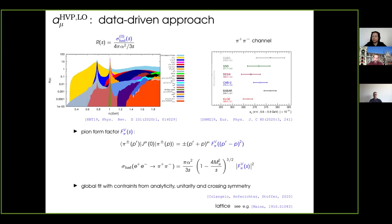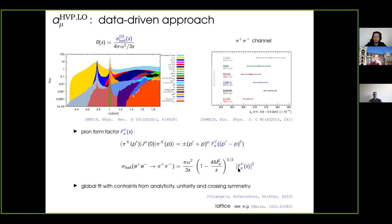This difference dominates the error on the hadronic vacuum polarization contribution to a_mu from the dispersive approach. The expectation is that new data from new experiments will allow to solve this problem, which is currently not fully understood. In order to introduce more theoretical constraint in this pi pi channel, one can also use the fact that it is related to the time-like pion form factor. The pion form factor can be constrained from analyticity, unitarity, and crossing symmetry, so one can do a global fit of experimental data imposing these constraints from theory.